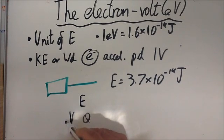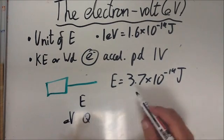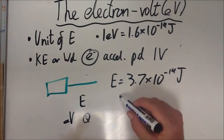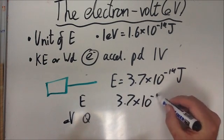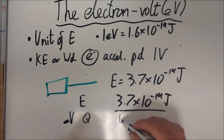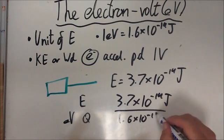And in this case we're looking to figure out the electron volts. So all you simply need to do is divide 3.7 times 10 to the minus 19 joules by 1.6 times 10 to the minus 19.